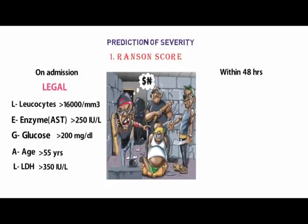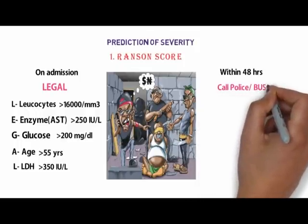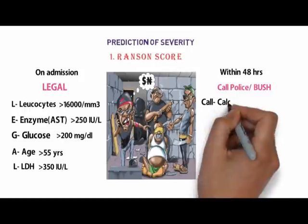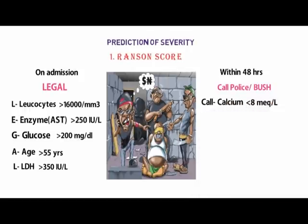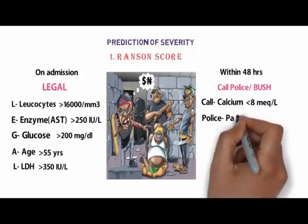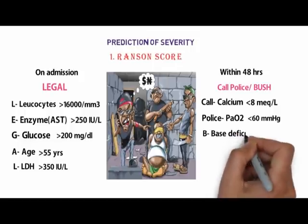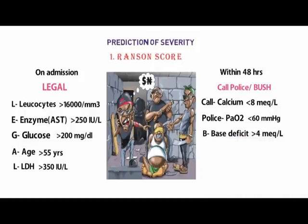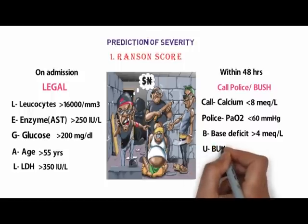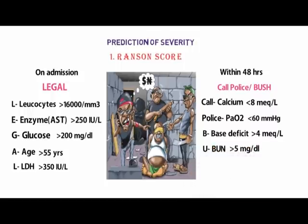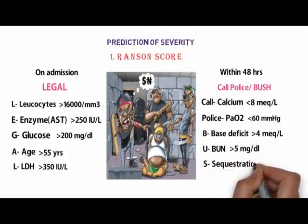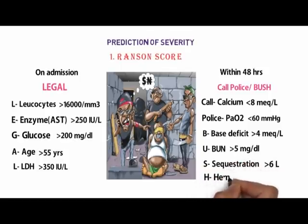Now, after the ransom call you have to call the police — or remember 'George Bush' — within 48 hours. Remember by the mnemonic CALL POLICE or BUSH: C for calcium less than 8 mEq/L, A for PaO₂ less than 60 mmHg, B for base deficit more than 4 mEq/L, U for BUN rise more than 5 mg/dL, S for fluid sequestration more than 6 litres, and H for hematocrit decrease more than 10%.